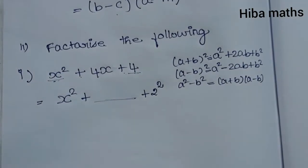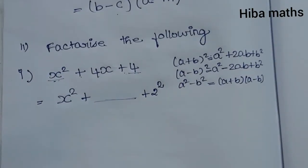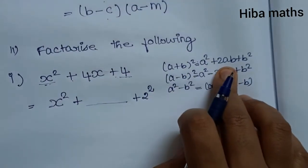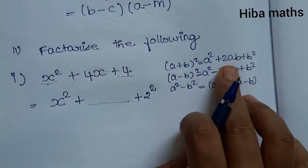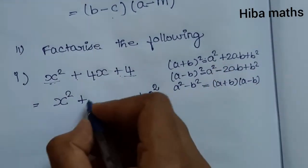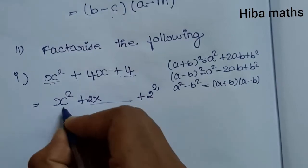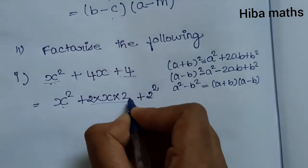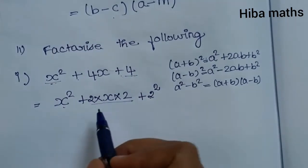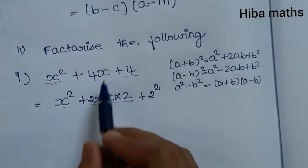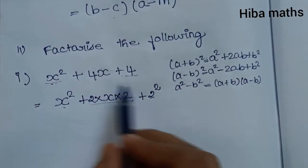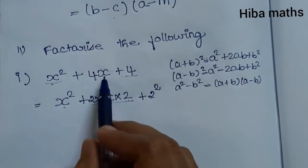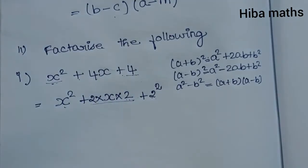We identify a = x and b = 2. Then 2ab = 2 × x × 2 = 4x. This gives us x² + 2(2)(x) + 2² which equals x² + 4x + 4. So the factorization is confirmed using the (a+b)² formula.